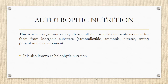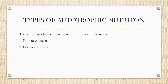Autotrophic nutrition is also known as holozoic nutrition. Don't forget — if they ask you which of these are the same, know that autotrophic nutrition is also the same thing as holozoic nutrition. For the types of autotrophic nutrition, we have two types: the first one is photosynthesis and the second one is chemosynthesis.